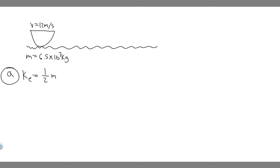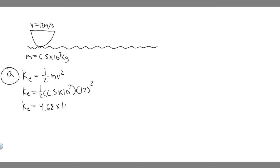We can solve for the kinetic energy if we know its mass, which we do, and we know its velocity at this time, which is 12 m/s. So all we have to do is plug it in. It's going to be one half times 6.5 times 10 to the 7, multiplied by 12 squared. When you plug this into your calculator — 0.5 times 6.5 times 10 to the 7, then multiply by 12 squared — you get 4.6 times 10 to the 9 joules. This is your answer to part A.